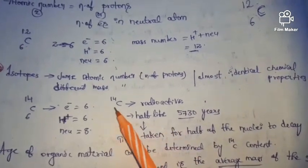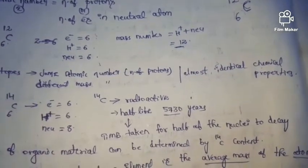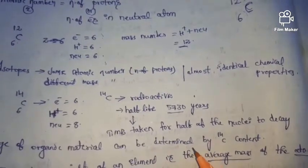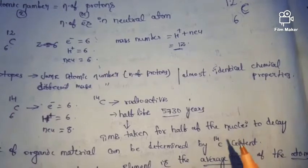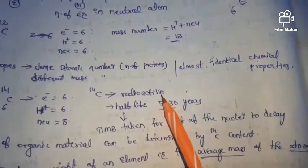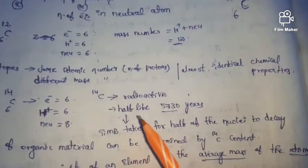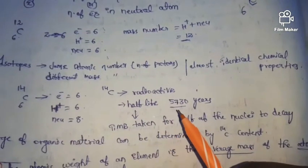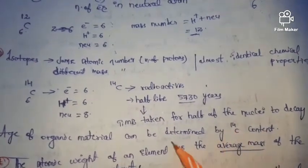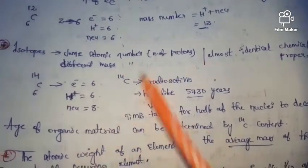The half-life of C-14 is 5730 years. Some of us may not know what half-life means. The time taken for half of the nuclei to decay is the half-life. Nuclei will decay — meaning the nuclei will disintegrate. So half-life is the time taken for half of the nuclei to decay. The half-life of C-14 is 5730 years. The age of organic material can be determined by C-14 content.